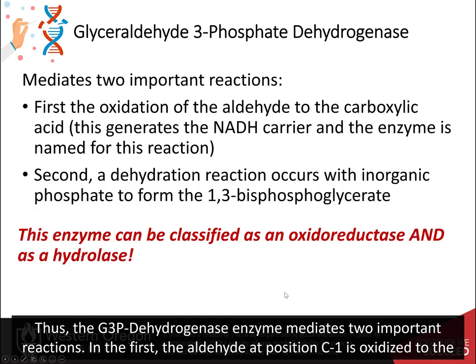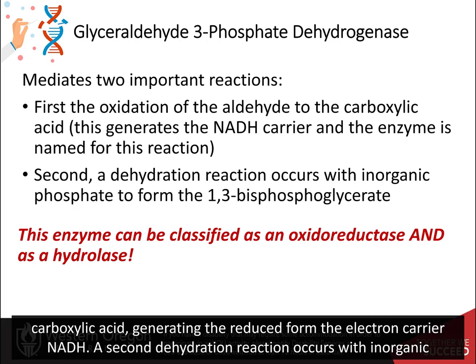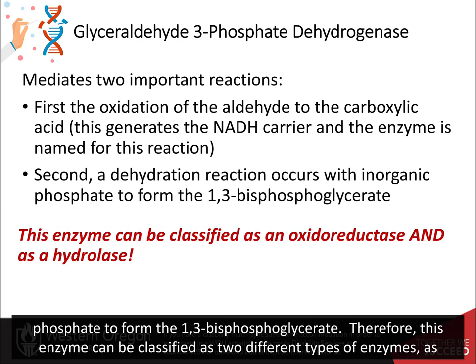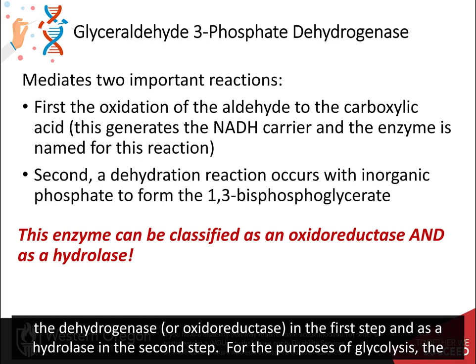The glyceraldehyde 3-phosphate dehydrogenase enzyme mediates two important reactions. In the first, the aldehyde at position C1 is oxidized to the carboxylic acid, generating the reduced form of the electron carrier NADH. A second dehydration reaction occurs with inorganic phosphate to form the 1,3-bisphosphoglycerate. Therefore, this enzyme can be classified as two different types of enzymes: as the dehydrogenase, or oxidoreductase, in the first step, and as the hydrolase in the second step.